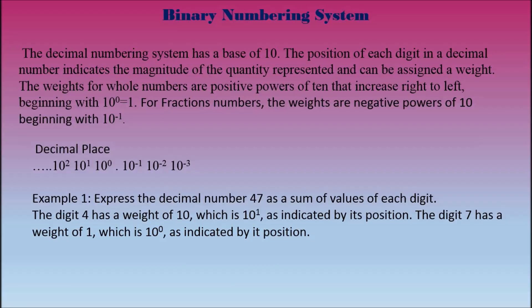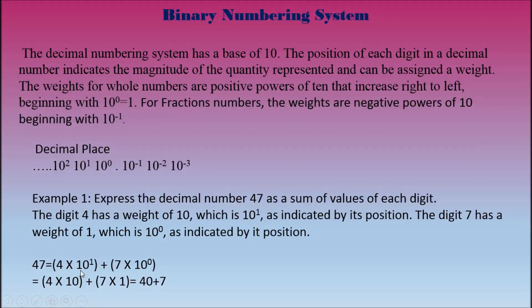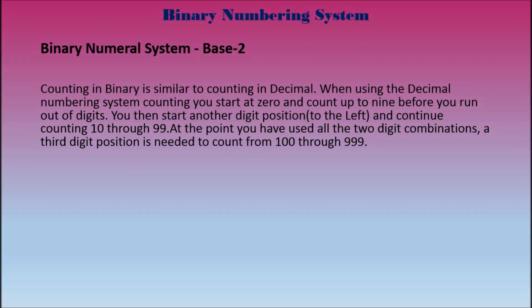Example 1: express the decimal number 47 as the sum of values of each digit. The digit 4 has a weight of 10, which is 10 to the power of 1, as indicated by its position. The digit 7 has a weight of 1, which is 10 to the power of 0. So 47 equals 4 times 10 to the power of 1, plus 7 times 10 to the power of 0, which equals 4 times 10 plus 7 times 1.